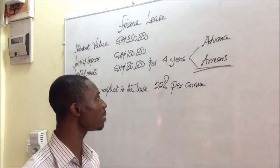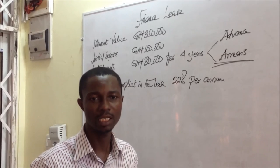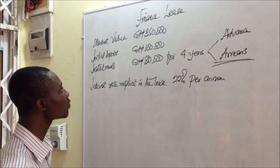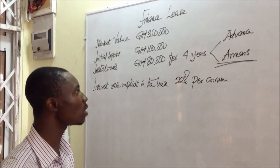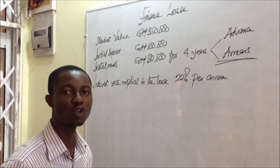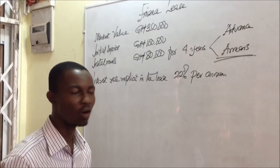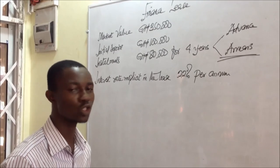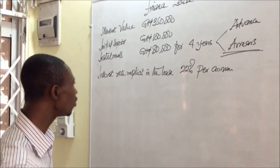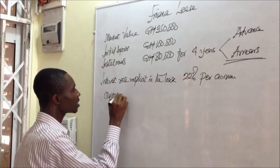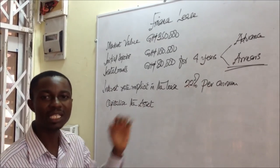The interest rate that is going to be applied on this lease agreement is 22%. This would typically be given in the question. We also need to look out for whether, at the end of the lease, there is going to be an option fee, a guaranteed residual value, or whether the lessee is going to own the assets after they lease them. Since we have ascertained that this is a finance lease, we know that we need to capitalize the assets in the books of the lessee.